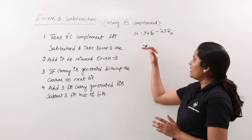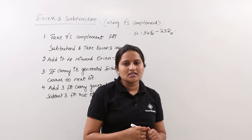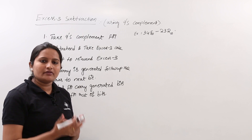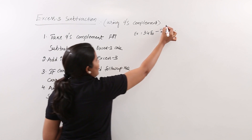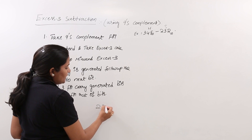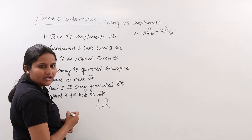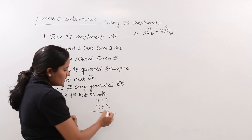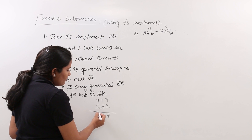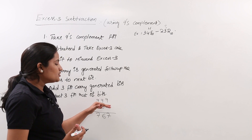For better understanding, let's take the problem 345 decimal minus 232 decimal. First we need to take the 9's complement of the subtrahend, 232. The 9's complement is obtained by subtracting each digit from 9: 9 minus 2 is 7, 9 minus 3 is 6, 9 minus 2 is 7. So 767 is the 9's complement of 232.